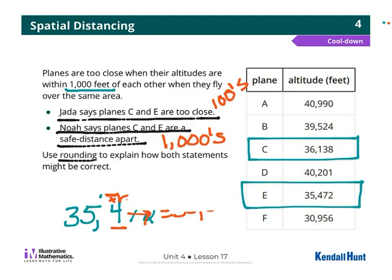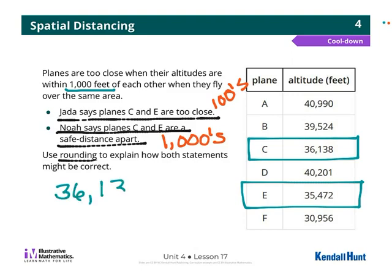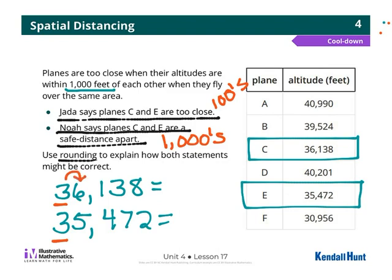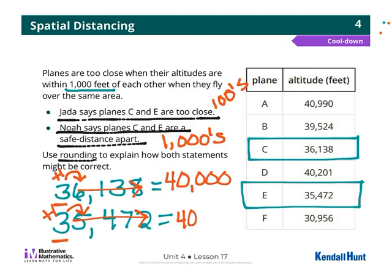What if we rounded to the ten thousands? So 36,138 — look to the right, it's a six, add one, the rest all become zeros — that rounds to 40,000. For 35,472 — look to the right, add one, those become zeros — it also rounds to 40,000. So the ten thousands place would not work because now we're showing they are too close together — they're exactly the same. That would not be good.